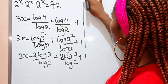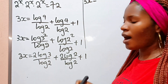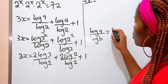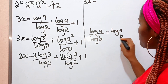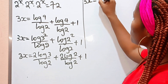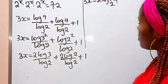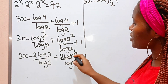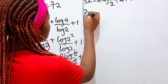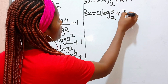So we have 3x equal to 2 log 3 over log 2. Now when you have log A divided by log B, that equals log A base B. So we can write this as 2 multiplied by log 3 base 2. Then for the next term, log 2 divides itself to give 1, and 2 times 1 is 2, plus 1. So 3x equals 2 log 3 base 2 plus 3.